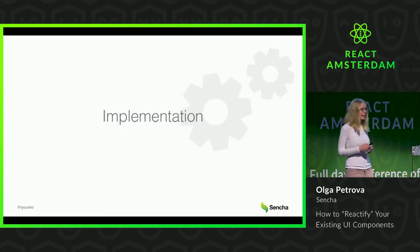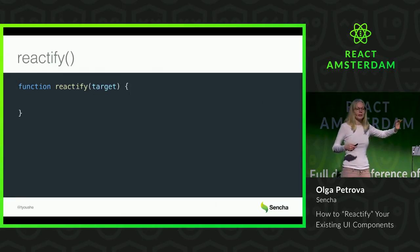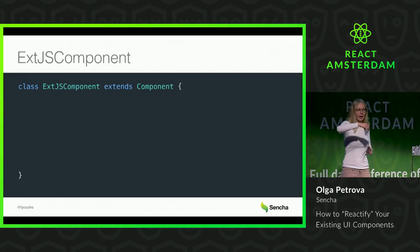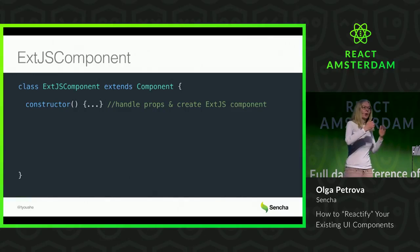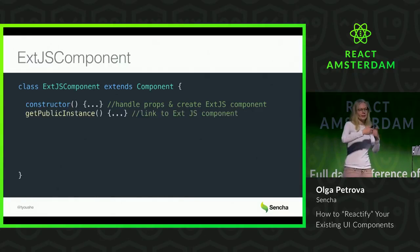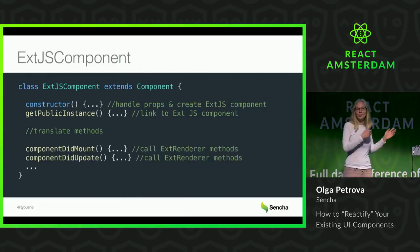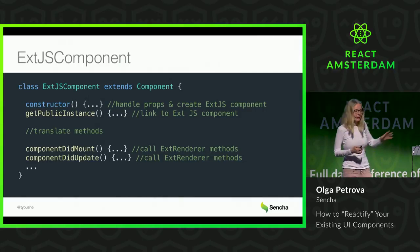So how could you implement this? First, a reactify function takes any exe.js component type and returns a class that will extend exe.js component. Exe.js component is a wrapper itself — it extends the React component class. Its constructor will take props and create the underlying exe.js component. It will return this component as the output of the getPublicInstance function. It will also have methods that translate React method calls into exe.js method calls, and it will implement all the magic inside componentDidMount and componentDidUpdate functions.